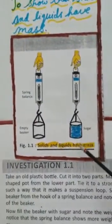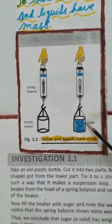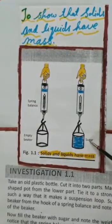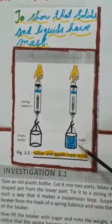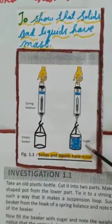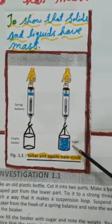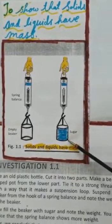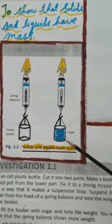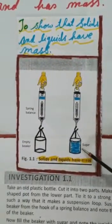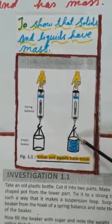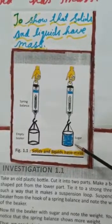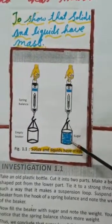What you will observe? You will observe that the spring balance shows more weight. Now in place of sugar you can take milk also, that is liquid you can take. Water you can take. What you will see? You will see that the spring balance shows less weight as compared to the previous instance when you used the sugar, but it will also show weight. Now from this experiment what we have concluded? We have concluded that solids and liquids have weight and hence have mass.